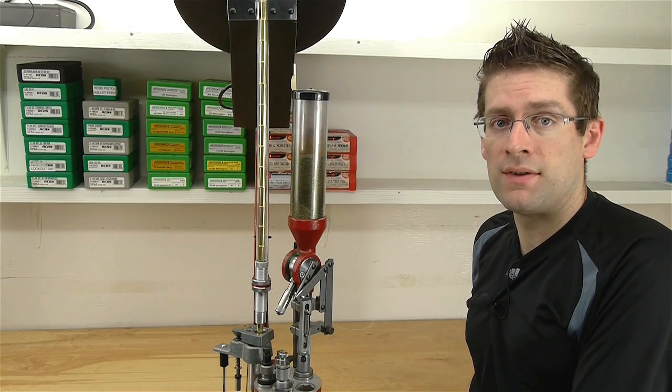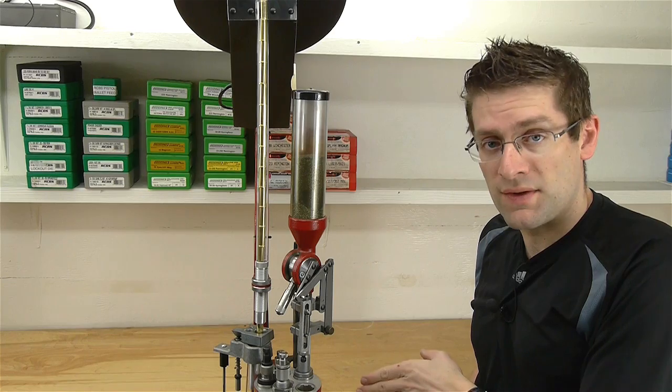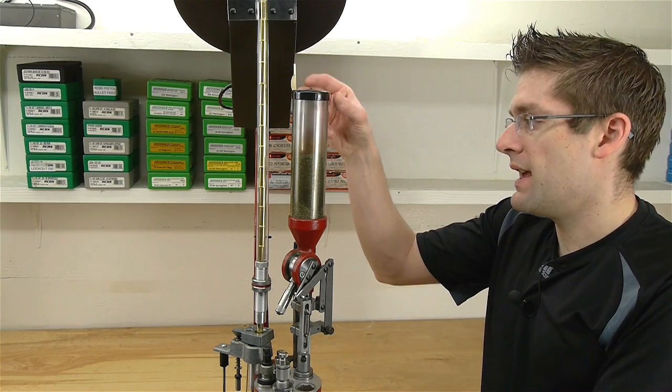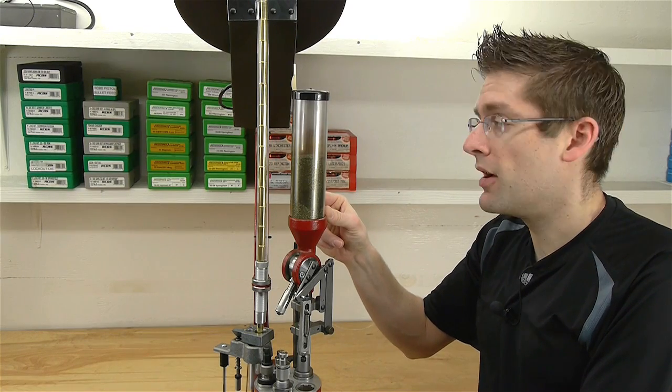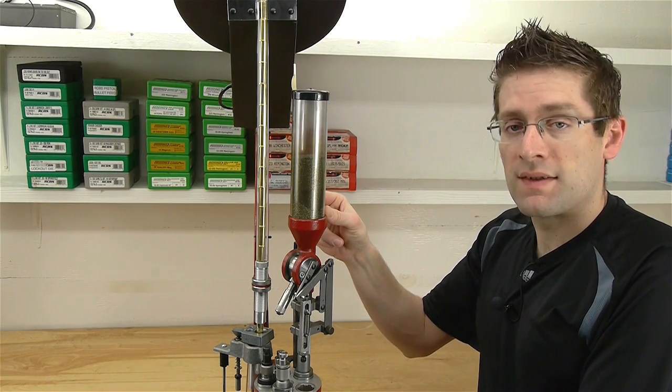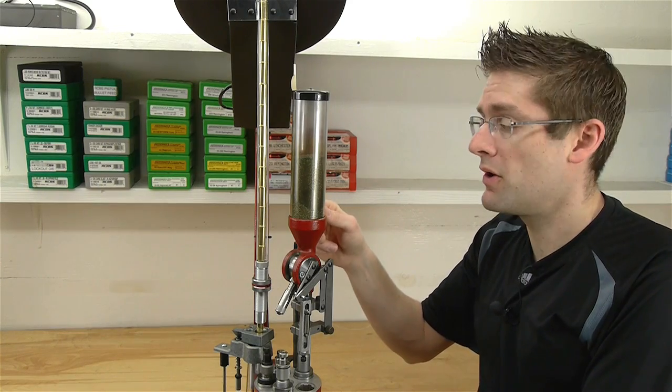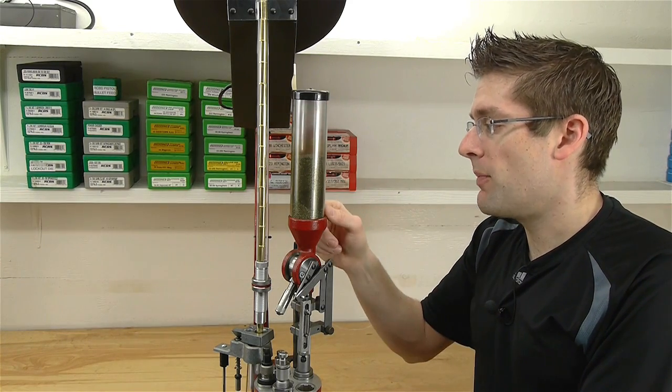So one of the great features with the Hornady lock and load system for the AP Press is the powder measure. It has a large hopper that has a really nice capacity for, especially when you're loading rifle cartridges, you're going to be going through a lot of powder. So the capacity is good.